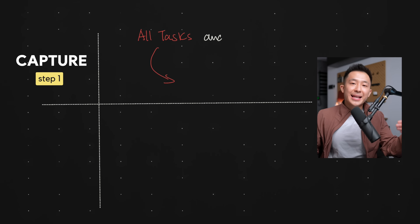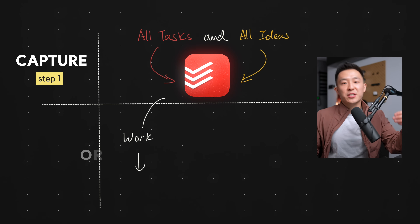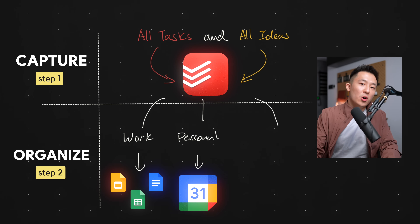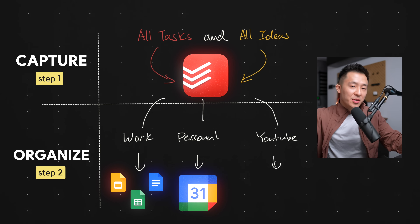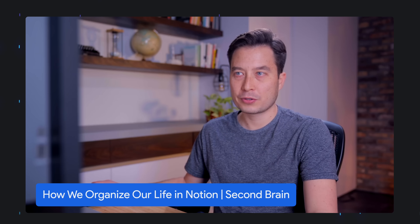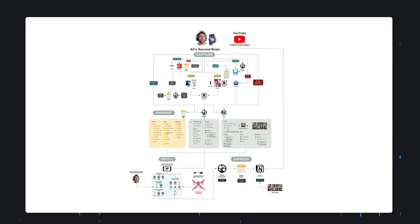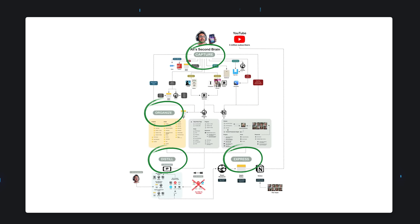In summary: capture all ideas and tasks in as frictionless a way as possible, then organize those to locations where that information will be used. Once you're comfortable with these two steps, check out Tiago Forte's second brain video, because capture and organize is actually part of his four-step process: capture, organize, distill, and express — CODE. See you on the next video. In the meantime, have a great one.